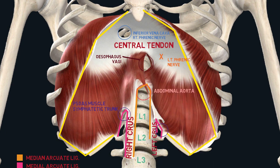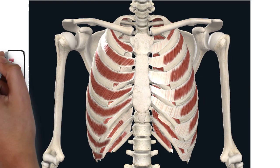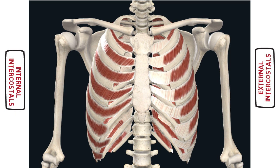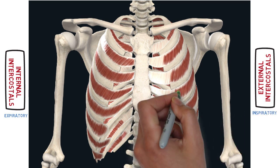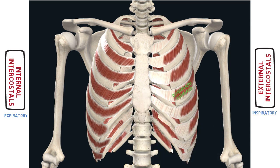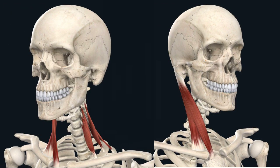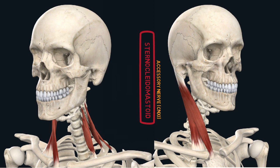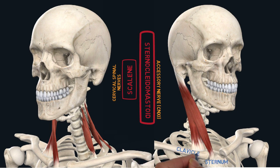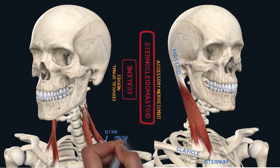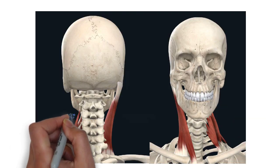Next are the intercostal muscles, both internal and external. To remember their function, just remember that both of them perform the opposite to the initials of their name: internal for expiratory and external for inspiratory. The external muscles are directed towards the center whereas the internal are directed outwards. Both of these structures are innervated by the intercostal nerves. Next is the sternocleidomastoid, which is innervated by the accessory nerve or cranial nerve 11, and scalene muscles by the cervical spinal nerves. As the name implies, sternocleidomastoid originates from the sternum and clavicle, inserting to the mastoid process of the temporal bone. The scalenes originate from the first and second ribs and insert into the transverse processes of cervical 2 to cervical 6.